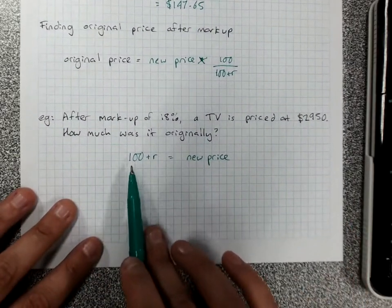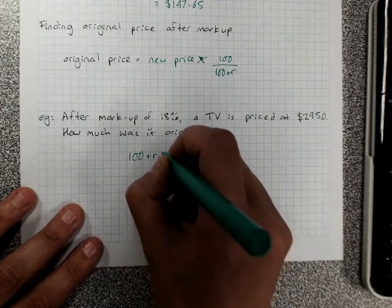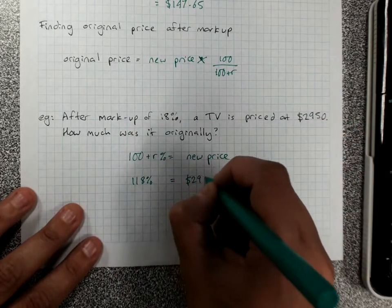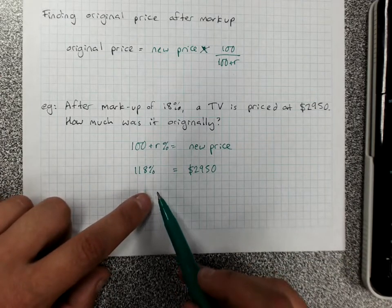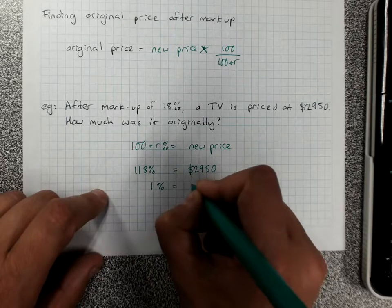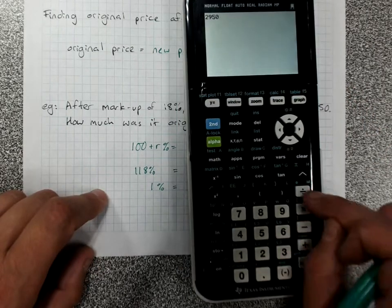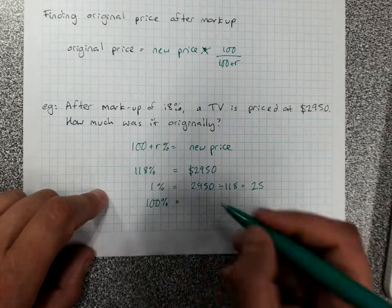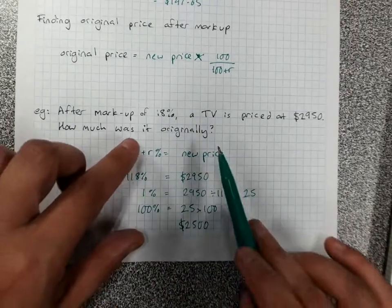And then substitute in what we know and solve the equation. So this is in percentages. 118% equals 2950. If you remember the unitary method from back in year 8, if I find 1%, I can then multiply by 100 to get 100%. So if I divide both sides by 118, the unitary method works.